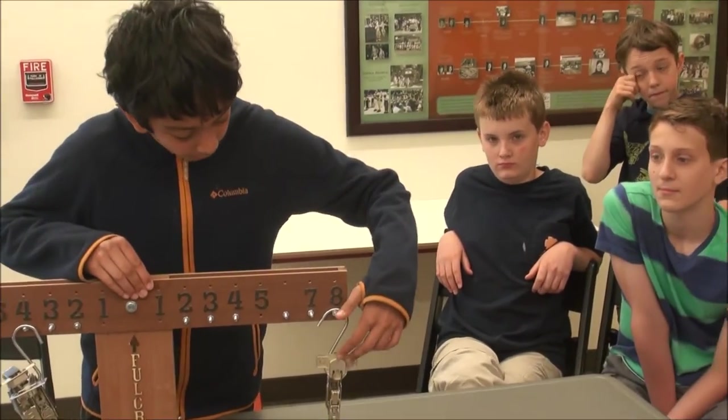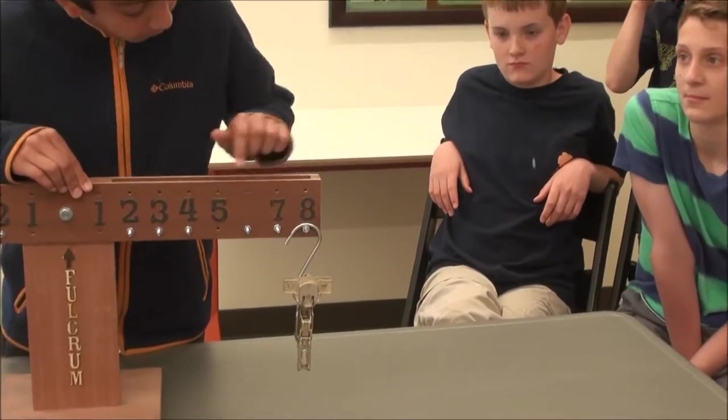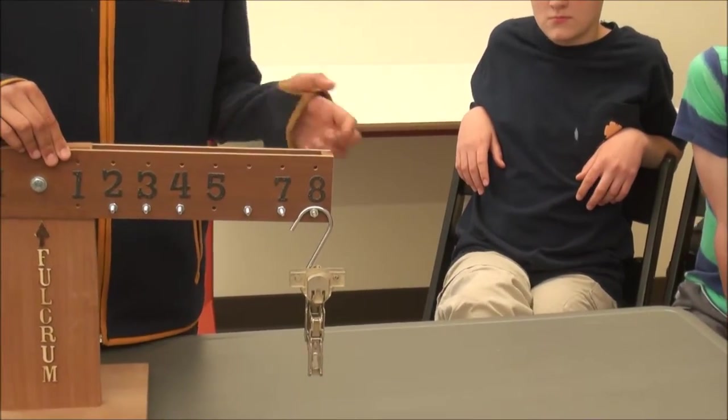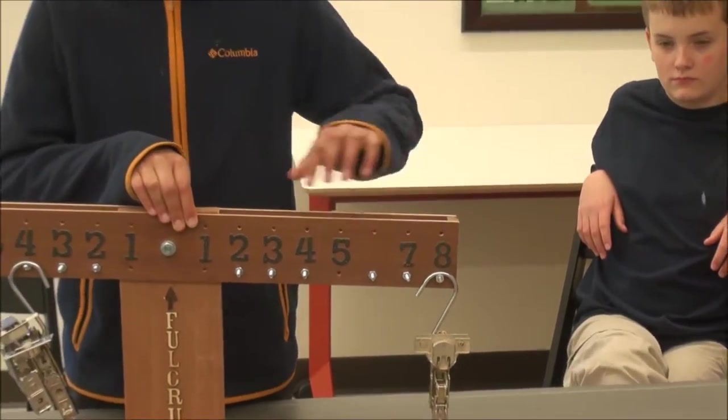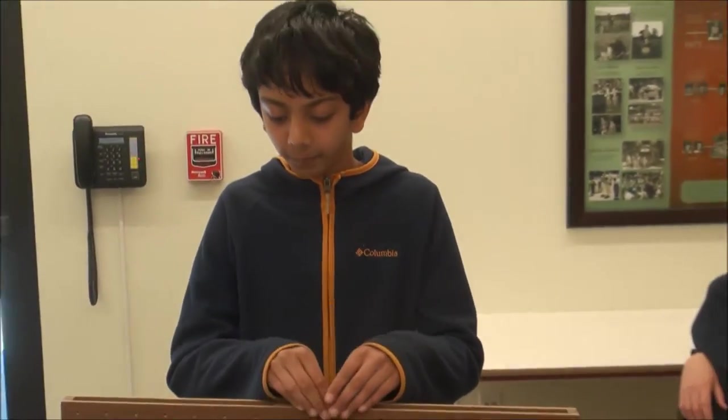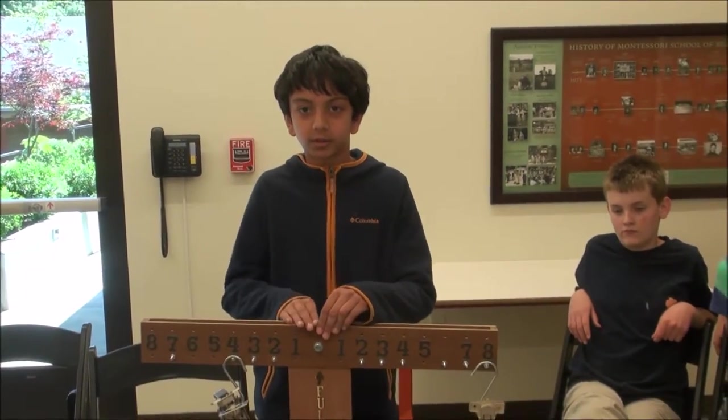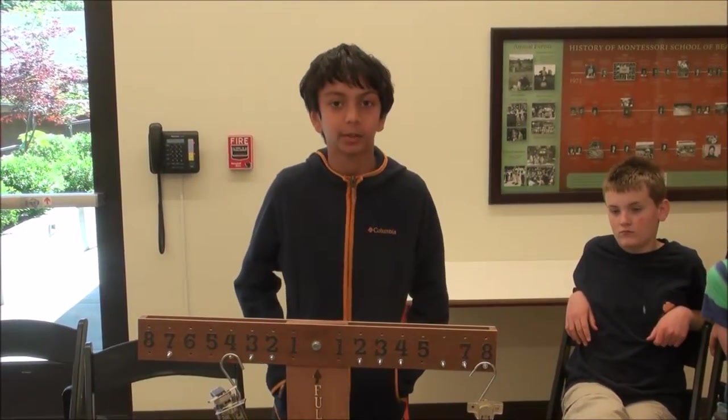Because here there's only 1 pound, and it's 8 inches from the fulcrum. So you'll say 8 times 1 equals 8. 4 times 2, 8 times 1 equals 8, so it's even on both sides. And then release it, it'll stay stable.